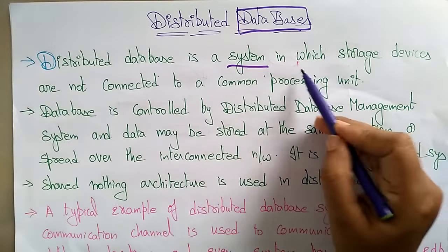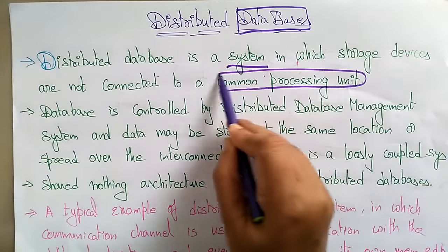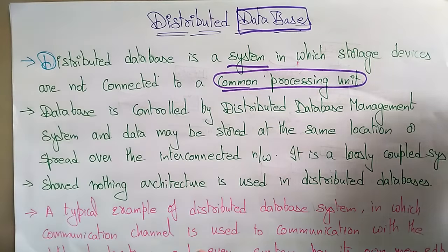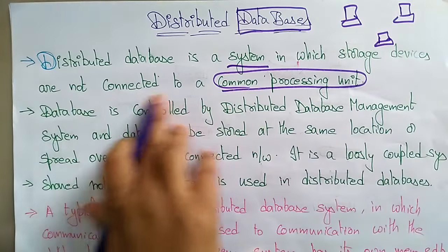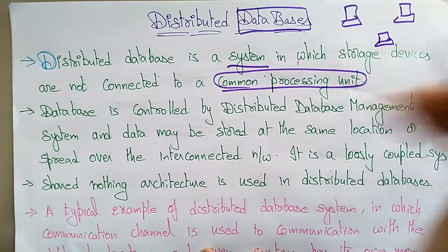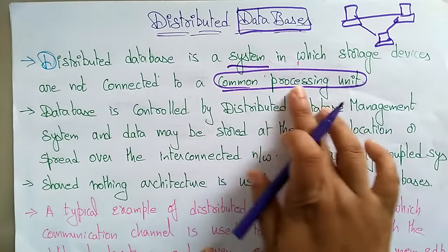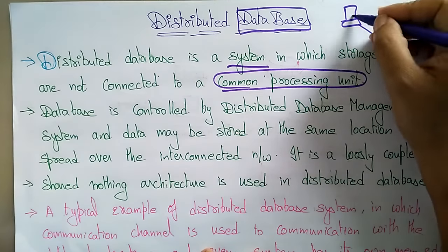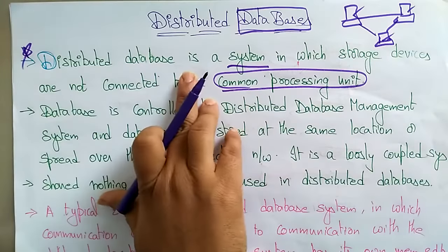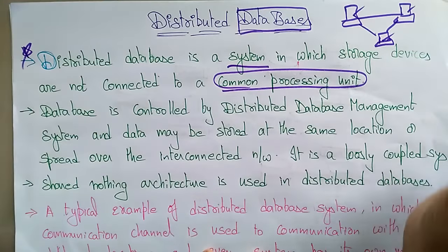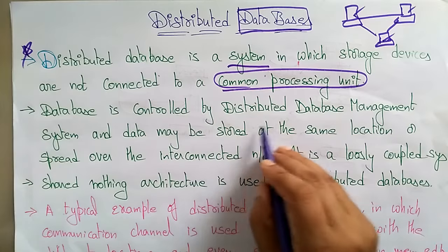A distributed database is a system in which storage devices are not connected to a common processing unit. Each system has its own storage device and its own processing unit. This is an important point to remember: a distributed database is a system in which storage devices are not connected to a common processing unit.